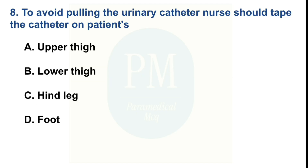To avoid pulling the urinary catheter, a nurse should tape the catheter on the patient's — Option A: upper thigh. Option B: lower thigh. Option C: hind leg. Option D: foot. The correct option is Option A — upper thigh.